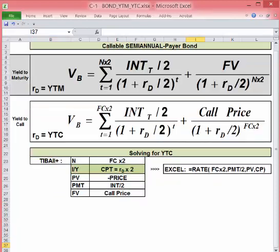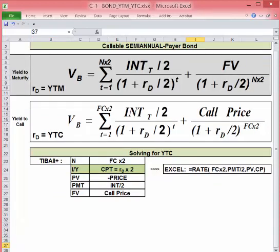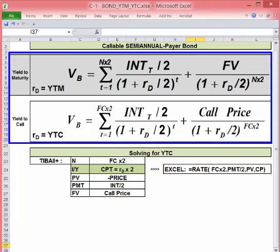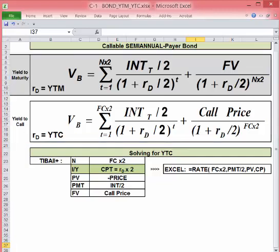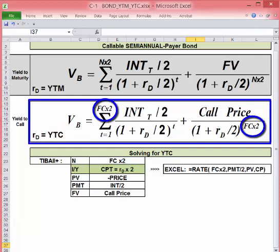Continuing with the semi-annual payer, if it's callable again we might want to solve for yield to call. The standard semi-annual bond valuation equation is still shown to highlight the differences. We make the same two changes as with an annual payer: N is now the number of periods to the first call date, and FV is the call price including the call premium.